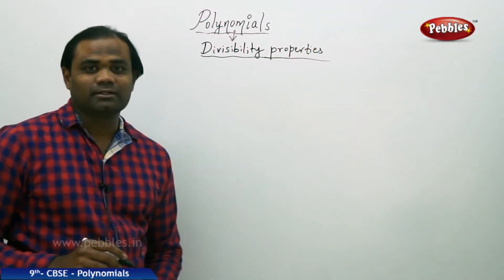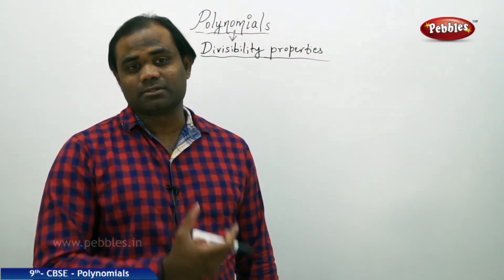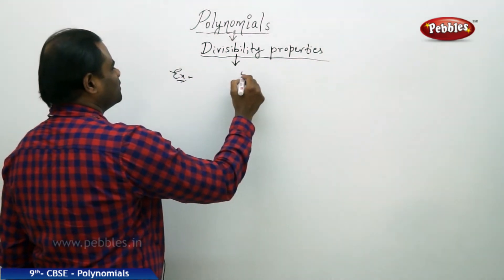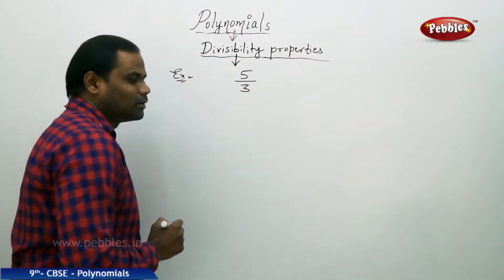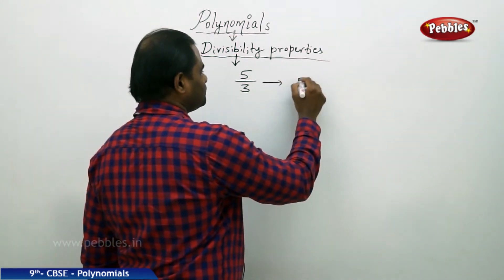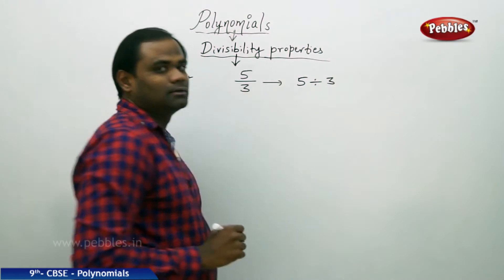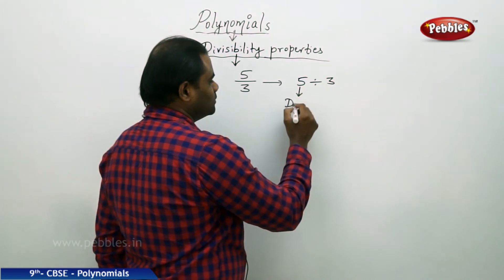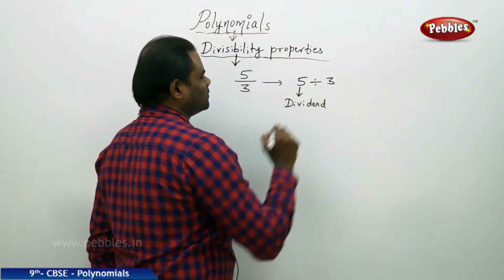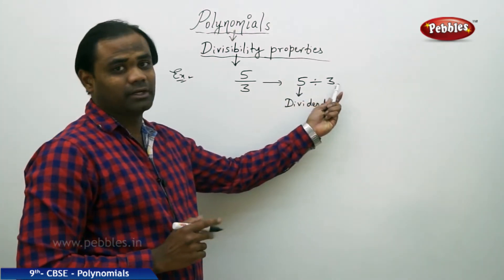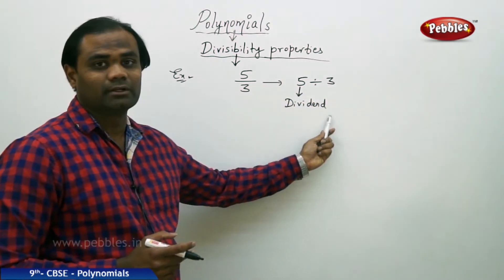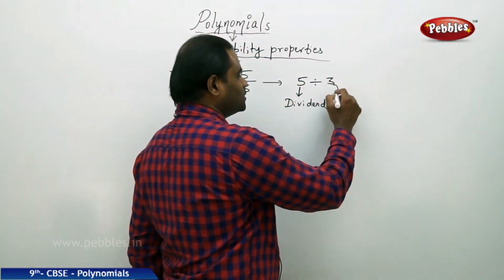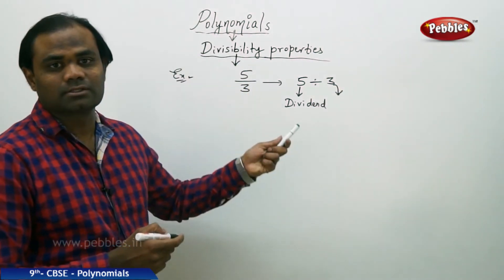Let's understand the divisibility properties by taking a simple example. I have the number 5 divided by 3. The number which is being divided is called the dividend, and the number which acts in the division — in this case 3 — is called the divisor.